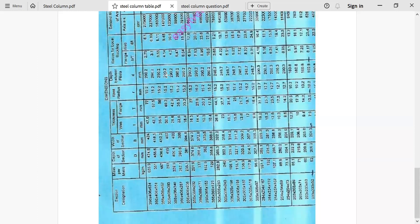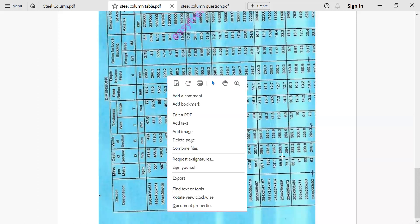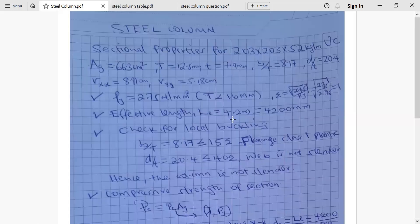That is how we obtain values. You move along 203 by 203 by 52 column and obtain along that column all the properties that are required. That is the approach we used to get these values we have here.